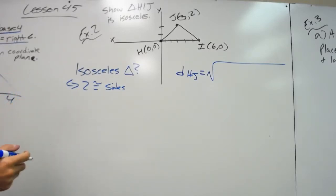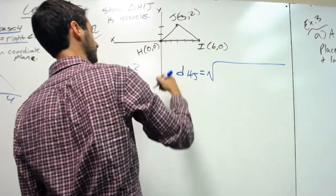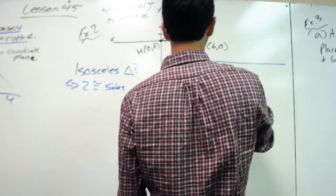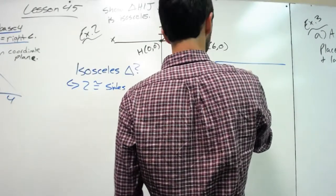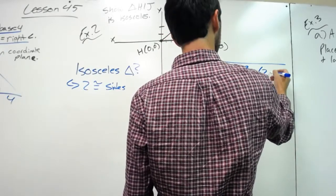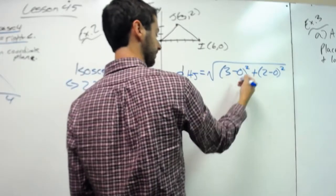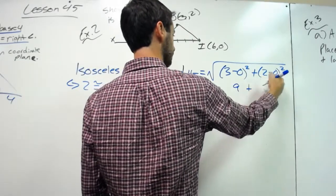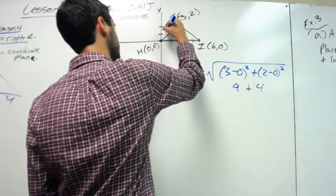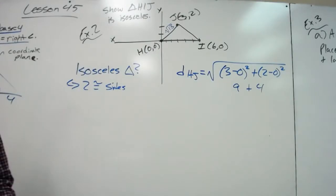So let's look at distance of HIJ. x of 2 is 3 minus x of 1, 0, squared, plus y of 2, 2, minus 0, squared. So therefore, you get 3 squared, 9, plus 2 squared, 4. So the distance here is square root of 13.